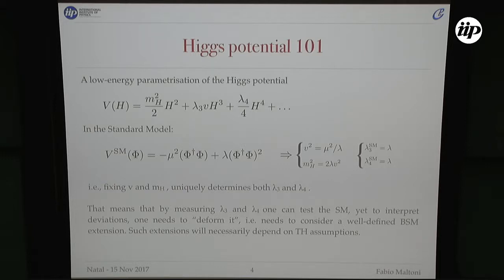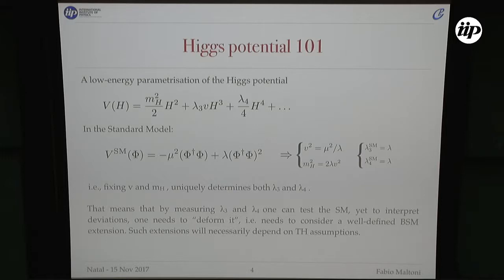At low energy, we write the Higgs potential — forgetting about the Goldstones and writing only the potential in terms of the Higgs in unitary gauge. We get the mass term, the triple interaction, and the four-point interaction. If we demand renormalizability in the standard model, there are only two terms that give rise to this low-energy description, with two parameters: mu and lambda. If you fix V from the mu and the W mass, and M_H from measurement, everything else is fixed. So lambda_3 and lambda_4 are fixed — you cannot change them. It's a prediction.